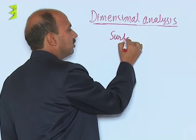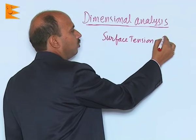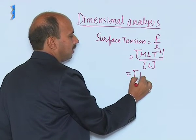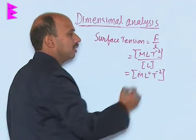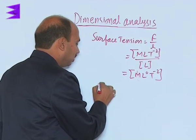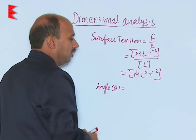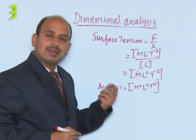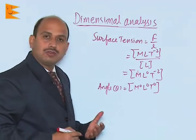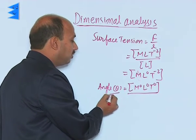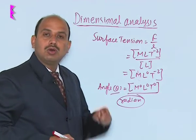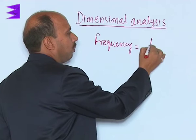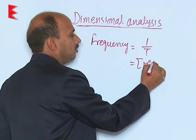Surface tension is force upon length, so its dimensional formula is M L T⁻² / L = M L⁰ T⁻². For the plane angle theta, it is M⁰ L⁰ T⁰ because theta equals arc length divided by radius — both have dimension L, so they cancel. Angle has no dimension but its unit is radian. The dimensional formula of frequency, which equals 1/T, is M⁰ L⁰ T⁻¹.